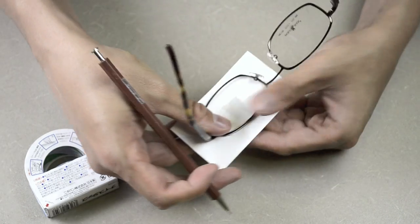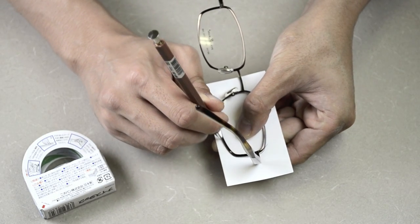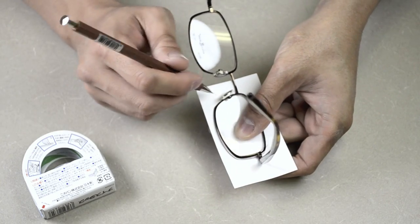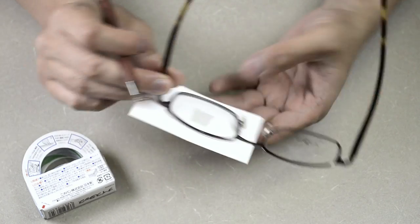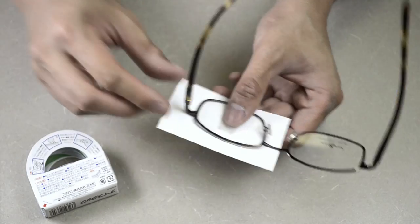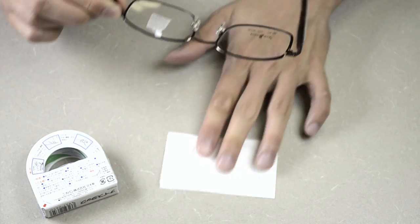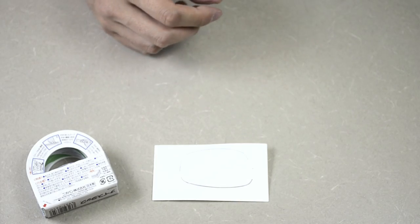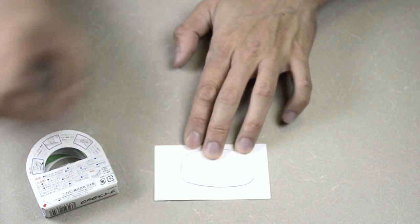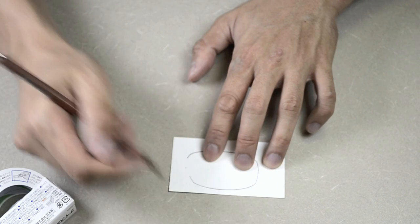Bear in mind that there are points such as the actual temple and the nose pad arm where it becomes a little bit difficult to actually trace inside. You can kind of leave those out for now, and once you remove the card you can fill in the rest. So gently remove the card, and as you can see we can fill in the rest of the spaces, first on the temporal side and the nasal side.